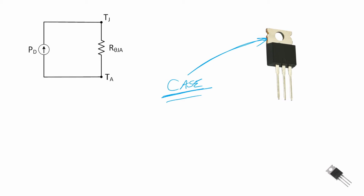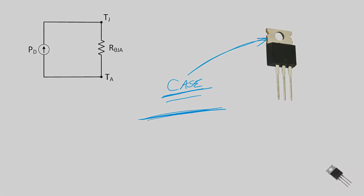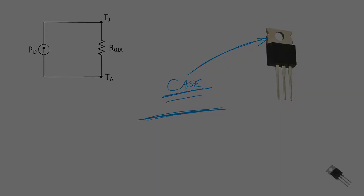As a side note, the case on a MOSFET, on an N-channel MOSFET, is typically connected to the drain. And so as we put a heat sink on there, we have to be cognizant of what that drain is connected to within the circuit, because we do not want to be shorting out the drain voltage node.